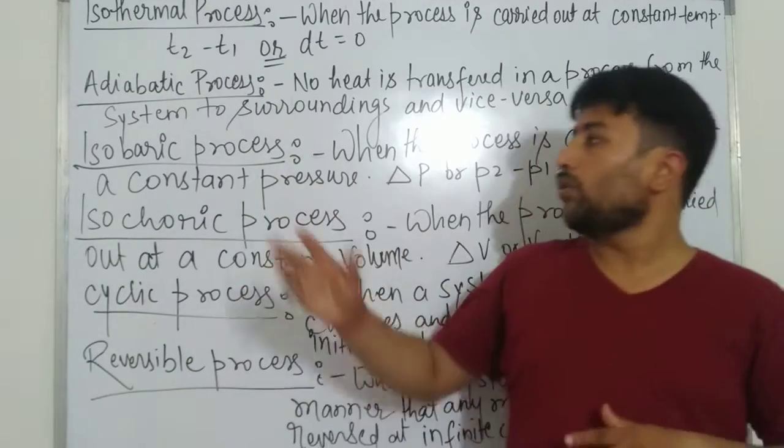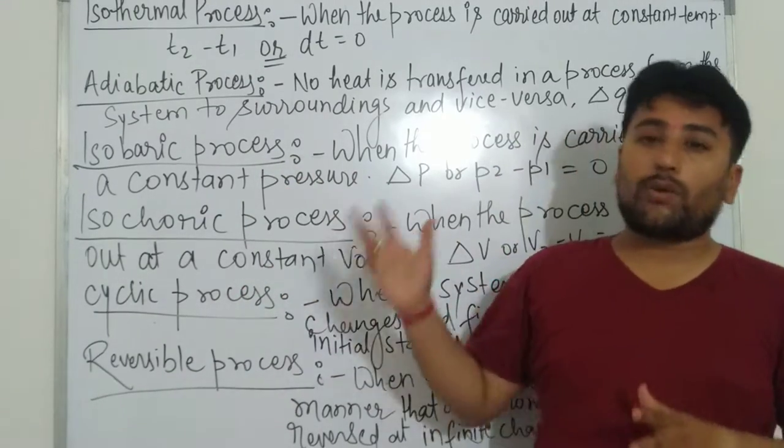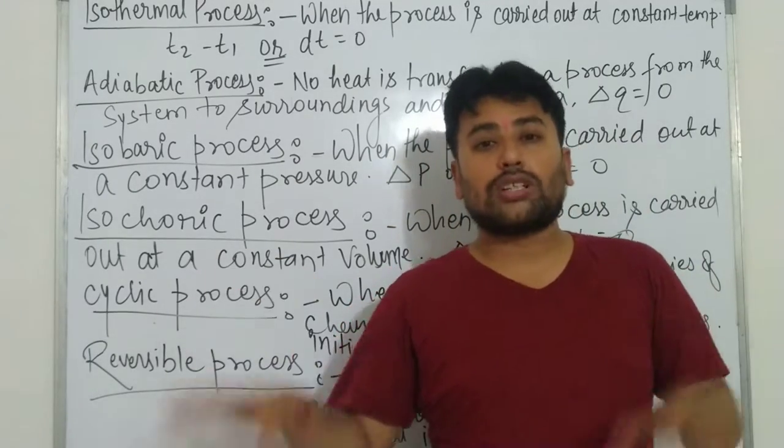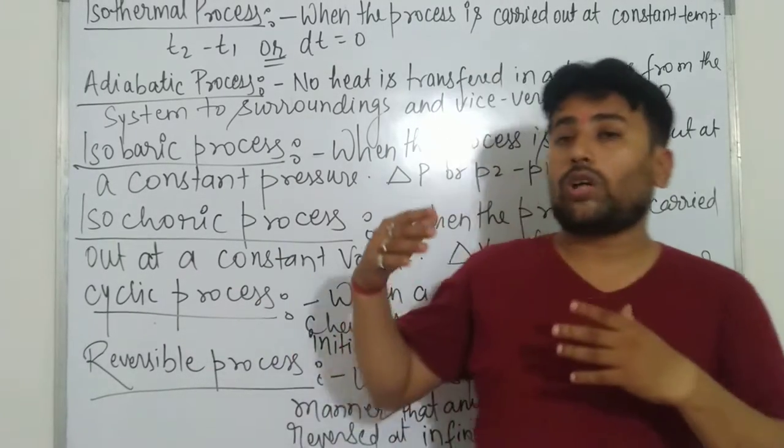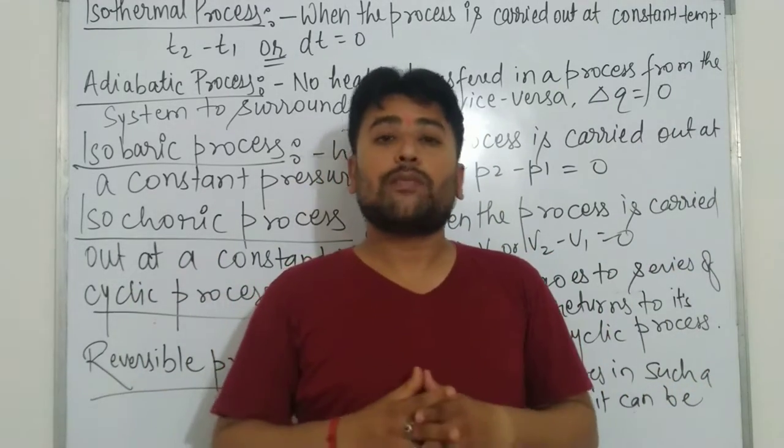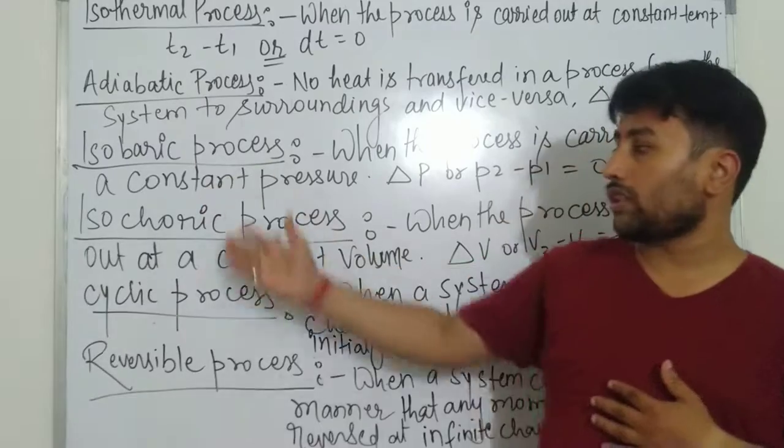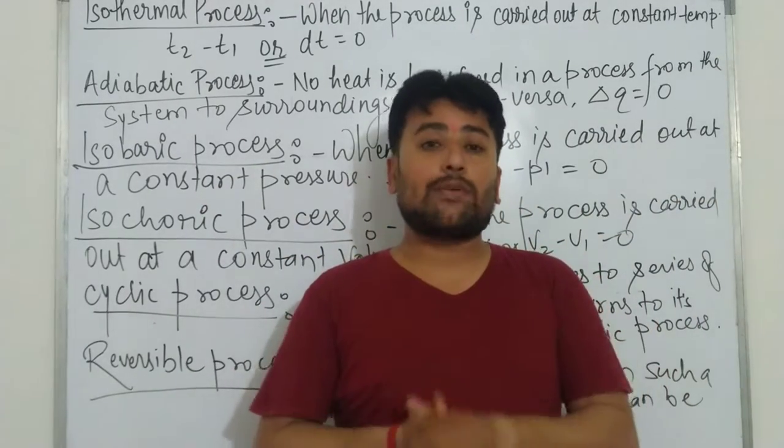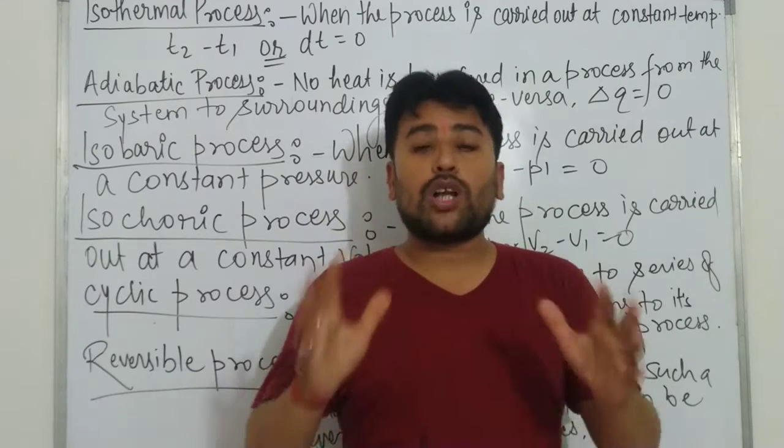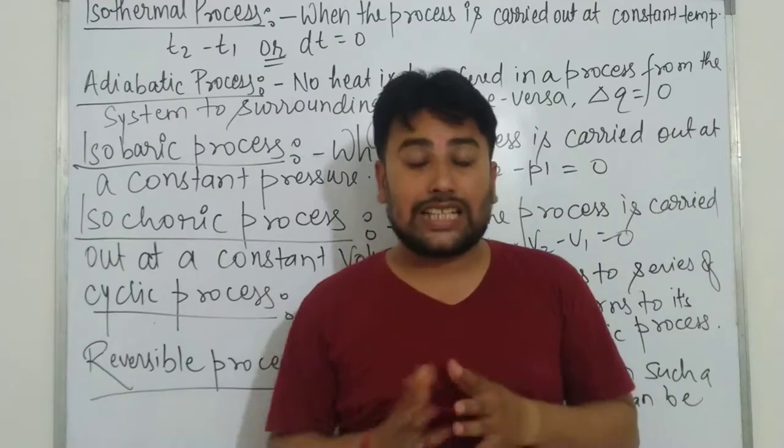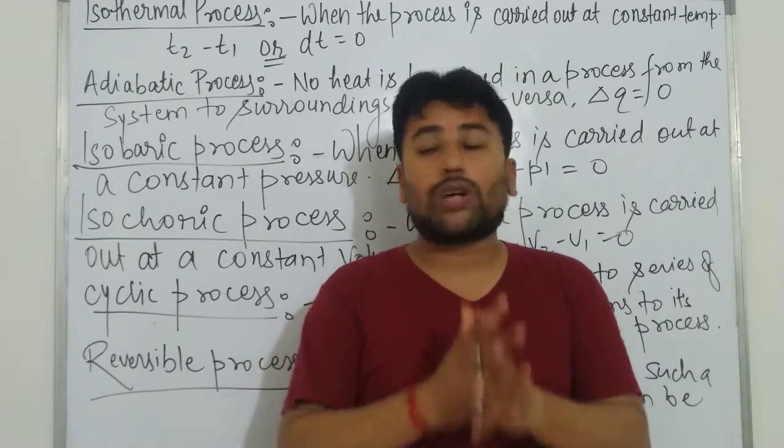Isobaric process - a process carried out at constant pressure. When you keep pressure constant, that's your isobaric process. Similarly, a process in which volume is kept constant while the process is carried out, work done occurs - that process is called isochoric process.